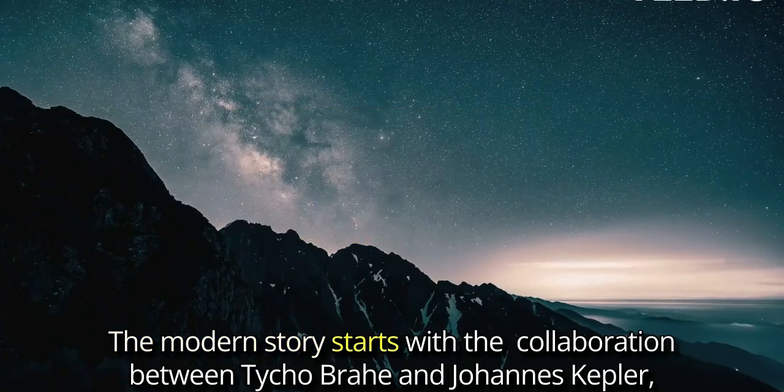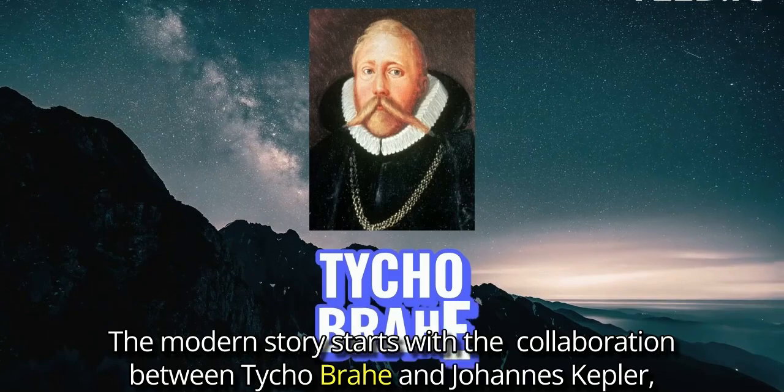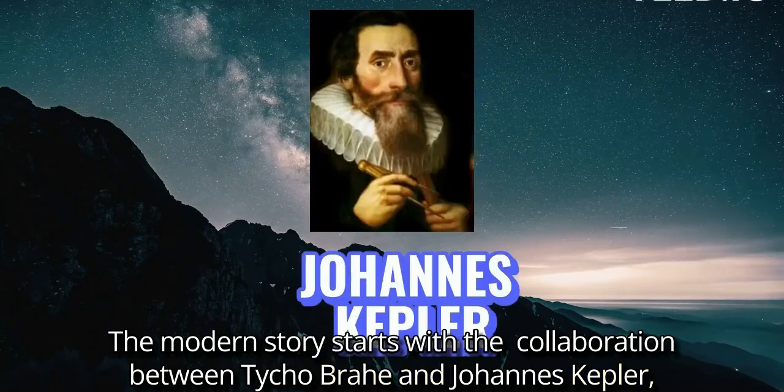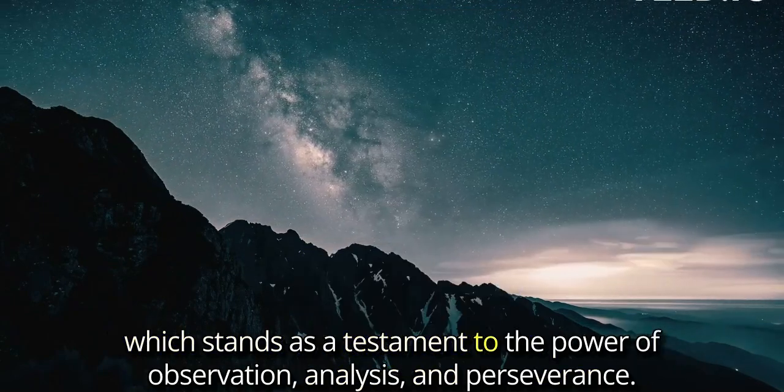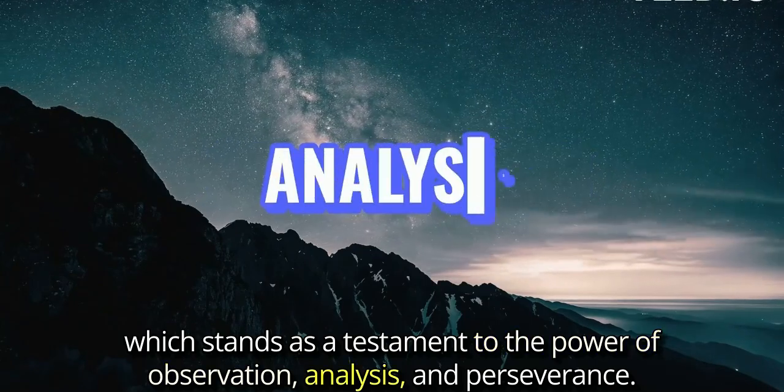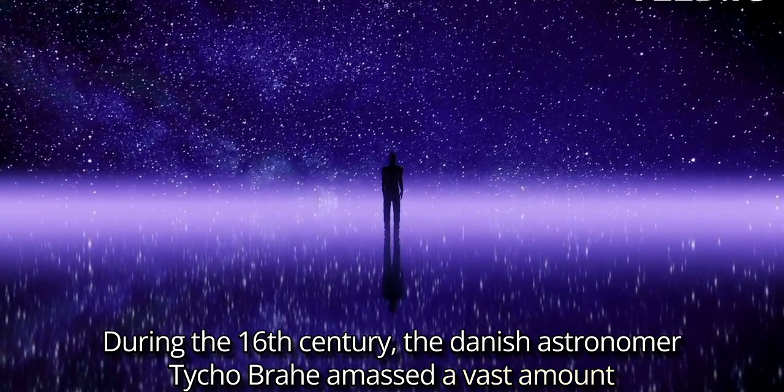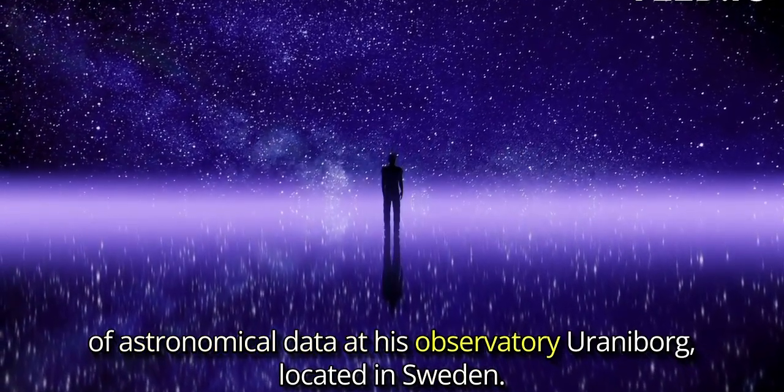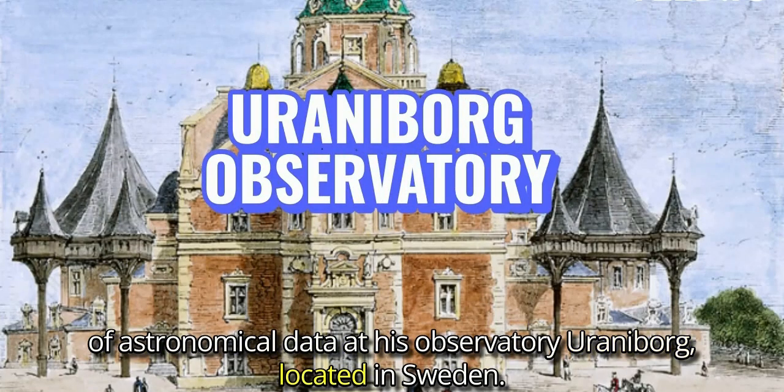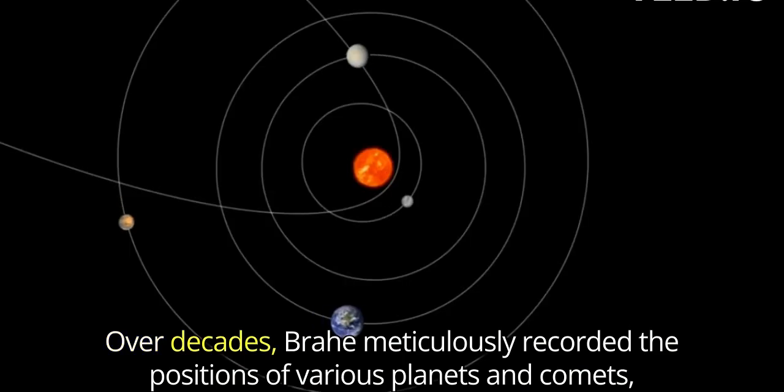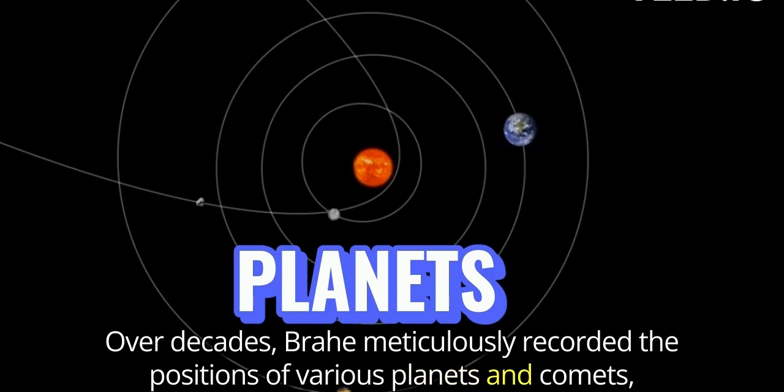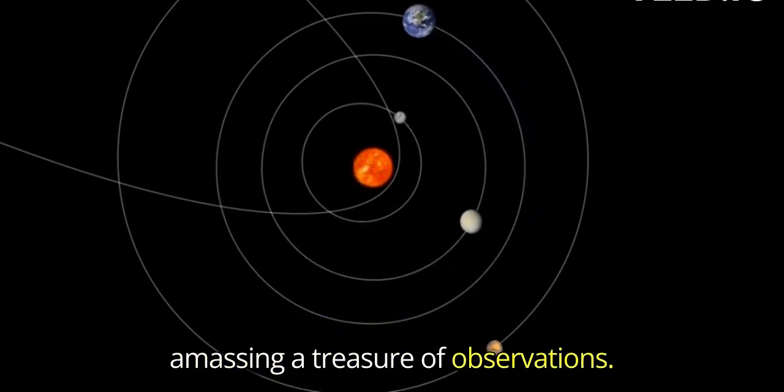The modern story starts with the collaboration between Tycho Brahe and Johannes Kepler, which stands as a testament to the power of observation, analysis and perseverance. During the 16th century, the Danish astronomer Tycho Brahe amassed a vast amount of astronomical data at his observatory, Uraniborg, located in Sweden. Over decades, Brahe meticulously recorded the positions of various planets and comets, amassing a treasure of observations.